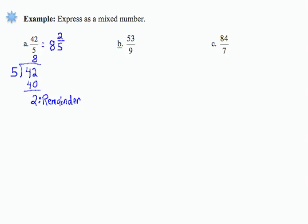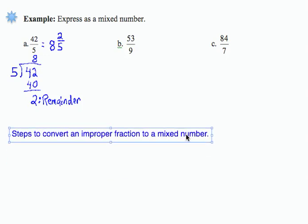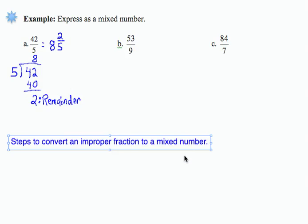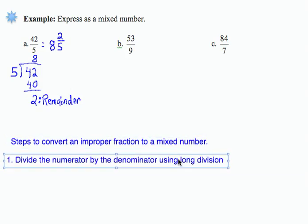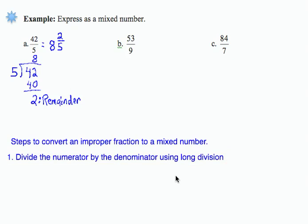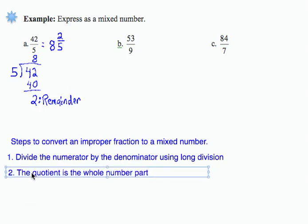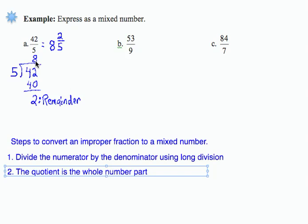So let's see if we can write up a process here that will help us with the other two problems. We are looking for steps to convert an improper fraction to a mixed number. The first thing we did was to divide the numerator, that was our 42, by the denominator of 5 using long division. The quotient, which is this number here, becomes the whole number part.